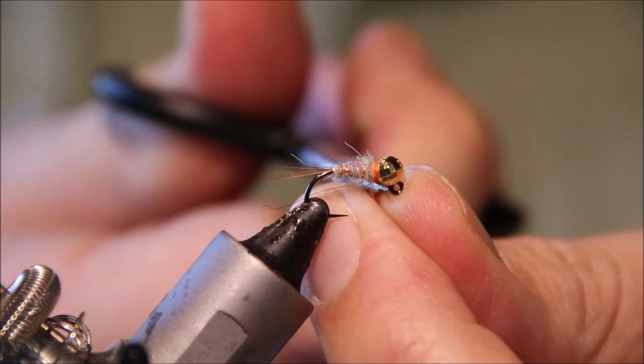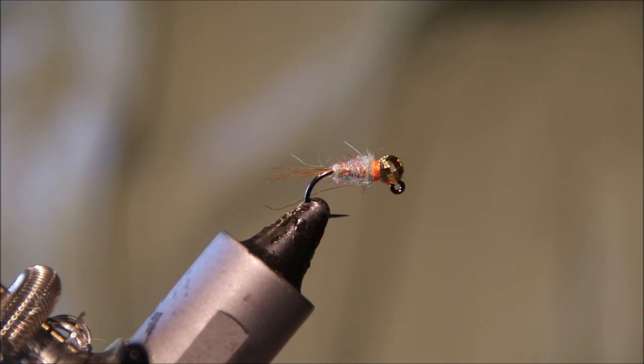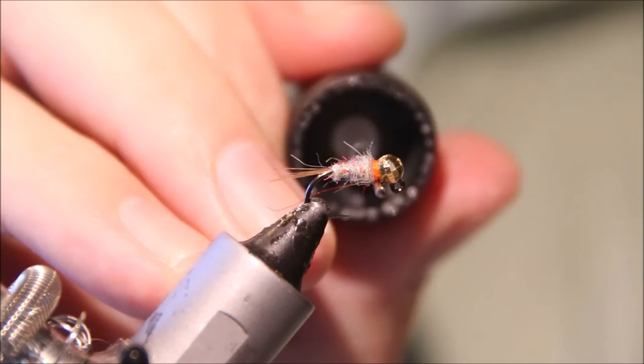Trim away your waste, and then just come in with a bit of head cement to protect those wraps.